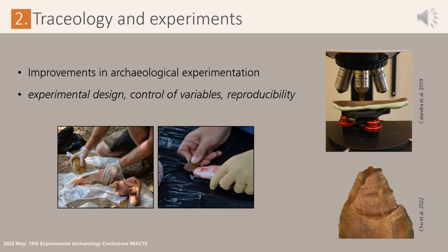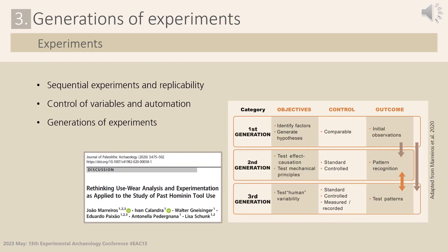More recently, since traceology relies on experiments, several researchers in the field have also pointed out the need to improve the way replications are done, so that results can not only be validated and reproducible, but also comparable between several studies. So here, in 2020, we published a paper that aimed to discuss the relevance of several aspects of experimental replications when applied to the study of how artifacts were used. We discussed the significance of replicability and reproducibility in sequential experiments, the importance of the control of variables and automation, and finally the need to use and integrate different generations of experiments in our investigations.